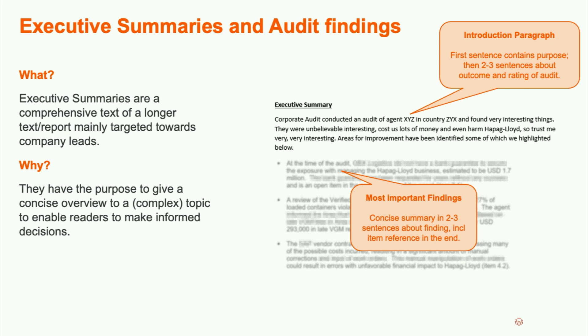How does it actually work? Auditors do a lot of interviews with different people in the department they are auditing. They are also checking a lot of datasets, data sources, and systems that the department is using. And in some cases, if something is not right or does not correspond 100% to how it actually should be, they write findings. The audit is done by multiple people — it can be more than 10 people in some cases — so everybody can have multiple findings.